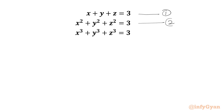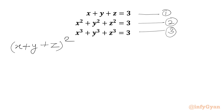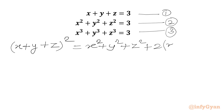Here we will write equation 2 and this would be equation 3. Now I will begin with one algebraic identity: the x plus y plus z whole square formula. This is equal to x squared plus y squared plus z squared plus 2 times the bracket xy plus yz plus zx.